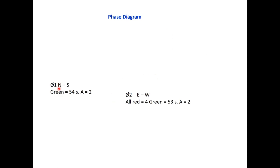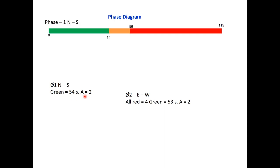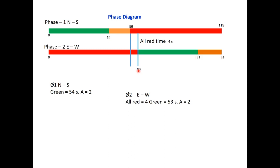We can now draw the phase diagram. For phase 1 (north-south): green starts at zero and lasts 54 seconds, followed by 2 seconds of amber (to 56 seconds), then red for the remainder. For phase 2 (east-west): after 4 seconds of all-red time (up to 60 seconds), green starts and lasts 53 seconds (to 113 seconds), then 2 seconds of amber, completing the 115-second cycle. That is how a simple signal is designed.